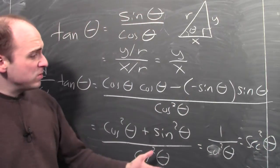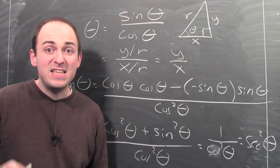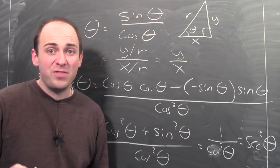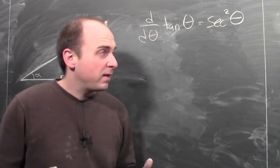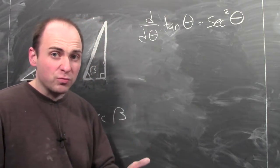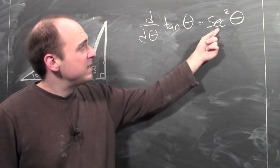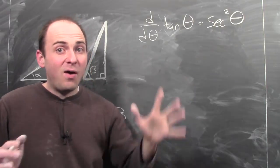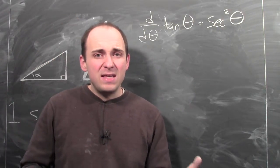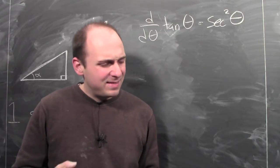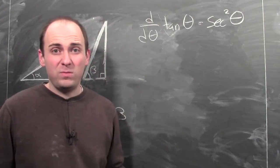So what all this shows is that the derivative of tangent theta is secant squared theta. We used the quotient rule to derive this result, and now I want to see how this plays out in a concrete example to get a real sense as to why a formula like this is true.